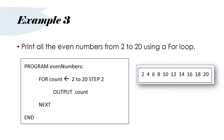Here's another example: print all the even numbers from 2 to 20 using a FOR loop — so 2, 4, 6, 8 all the way to 20. You must use a FOR loop; you could just hard-code the output, but we want you to practice your FOR loops. Program even numbers. FOR count, with the arrow to assign the value 2 to 20 — counting from 2 to 20 — and instead of the default step of 1, this time we've got STEP 2. OUTPUT count, then NEXT, then END. So every time we go around the FOR loop, we add 2 to the count variable: 2, plus 2 is 4, plus 2 is 6, and so on until we get to 20.